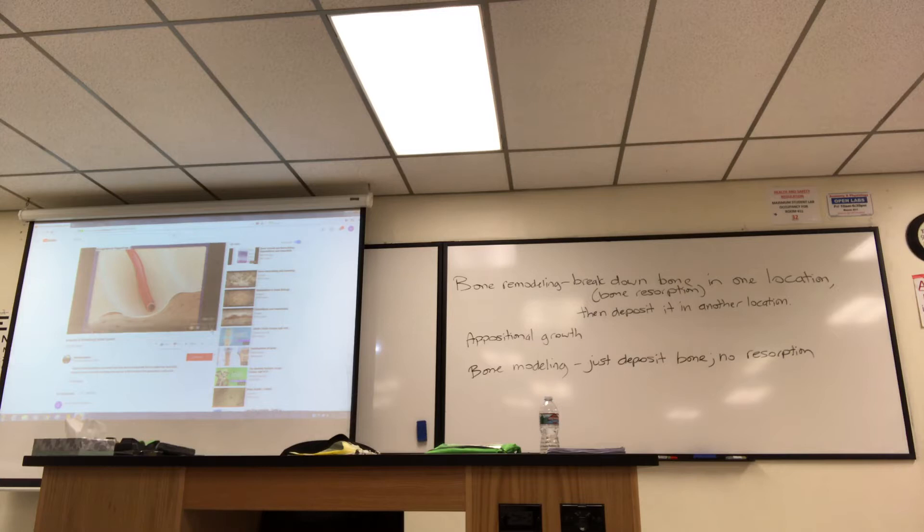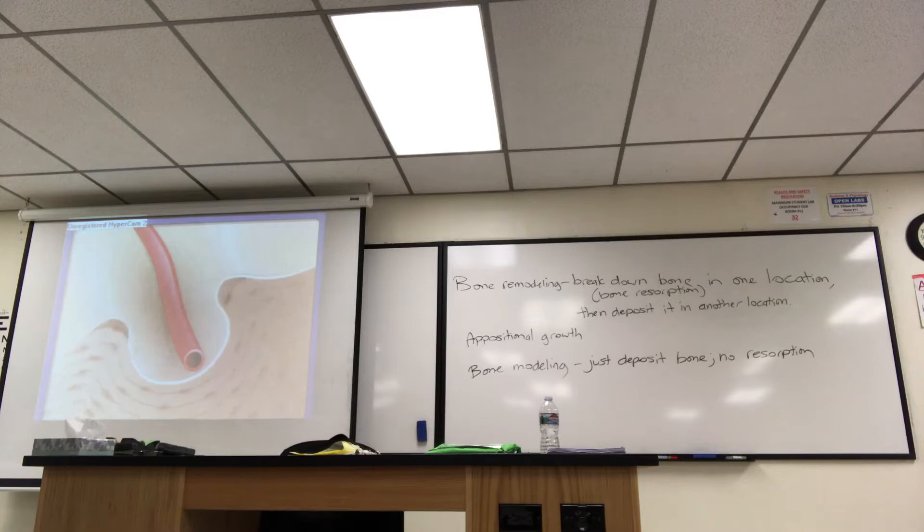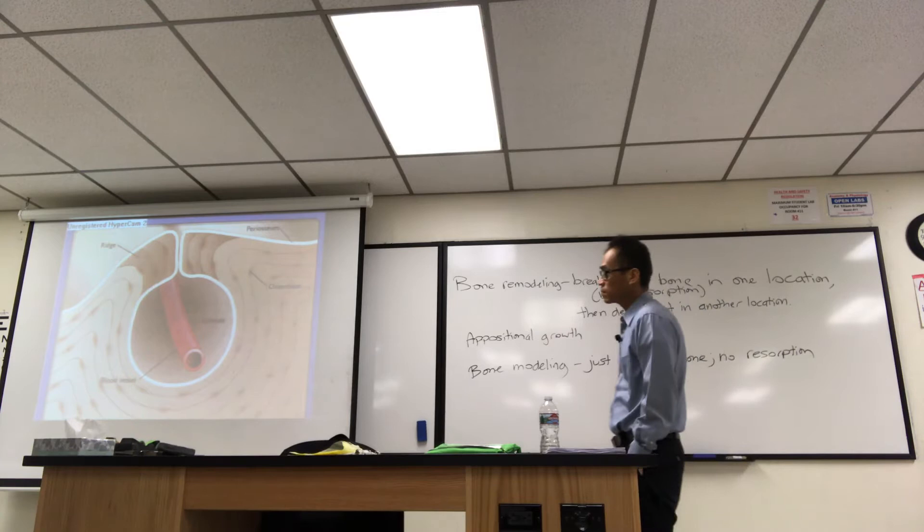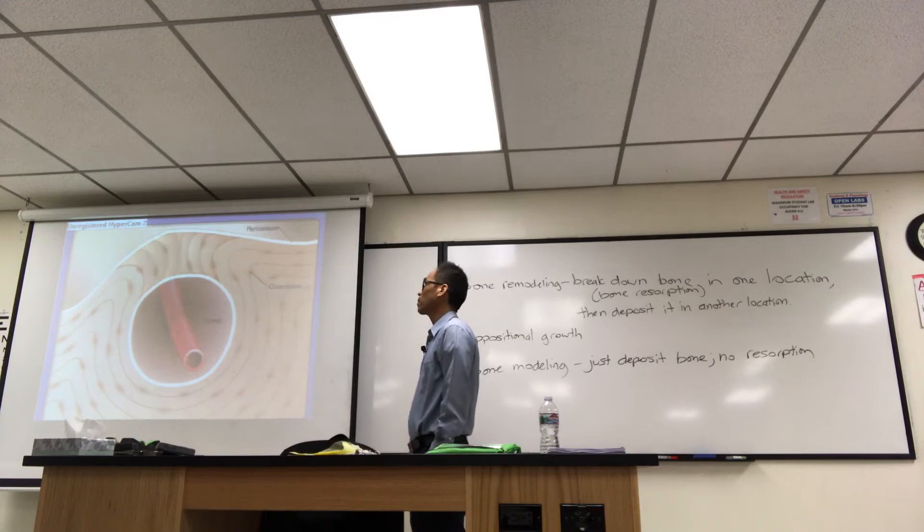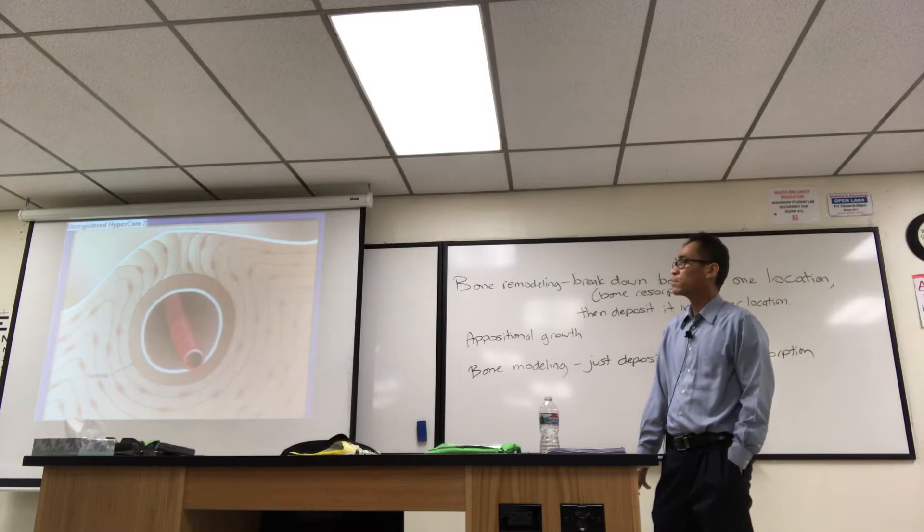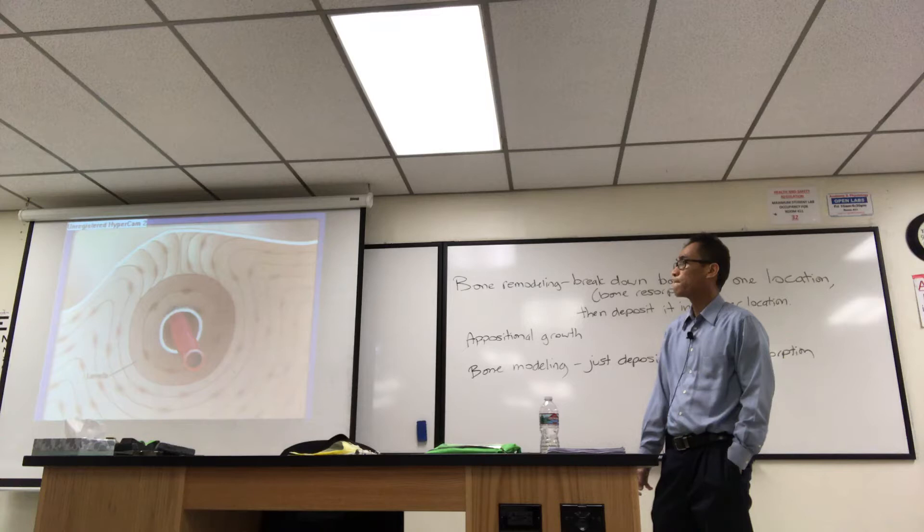Bones grow through the process of appositional growth. The formation of new bone on the surface of older bone or cartilage. Osteoblasts beneath the periosteum lay down bone to form ridges around a blood vessel. The blood vessel lies in a groove between the ridges. The groove is transformed into a tunnel when the bone built on the adjacent ridges meets. The periosteum of the groove becomes the endosteum of the tunnel. Osteoblasts from the endosteum lay down bone to form a new concentric lamella. The production of additional concentric lamellae fills in the tunnel and completes the formation of a new osteon.